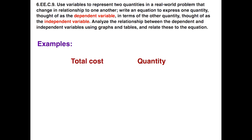Let's say the two quantities involved are total cost and quantity. Upon examination, it seems that the total cost would depend on the quantity of items that are bought. So, the total cost would be your dependent variable, because the cost depends on the quantity, and the quantity would be the independent variable.